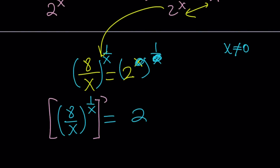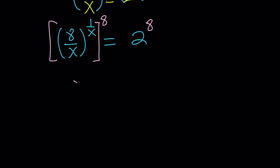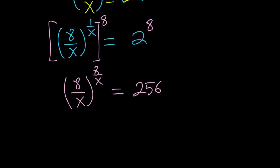Raise both sides to the 8th power, and boom, you're done. Now 1 over x will be multiplied by 8, giving you 8 over x to the power 8 over x equals 2 to the power 8, which is 256.